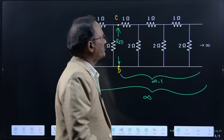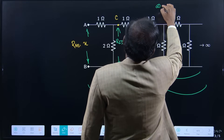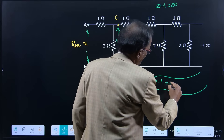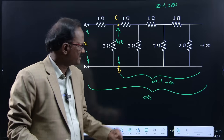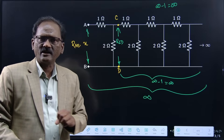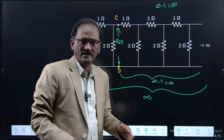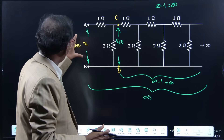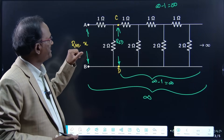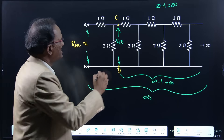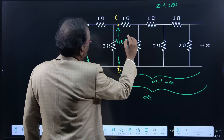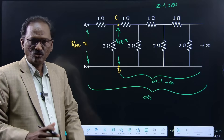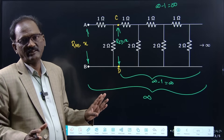What is the concept we are going to use? Infinity minus 1 is also equal to infinity. So R_CD will also be equal to infinity. If I assume R_AB is equal to X ohms, then R_CD will also be X ohms. Infinity minus 1 equals infinity, so there is no change in the equivalent value.